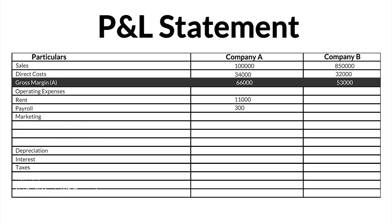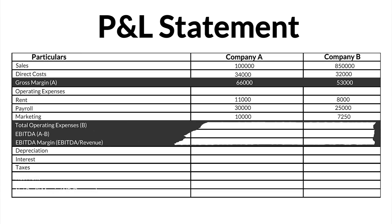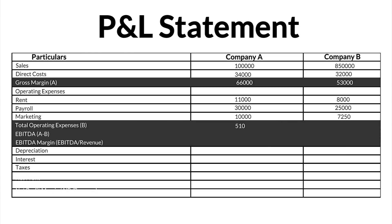To determine the profits earned by the company before depreciation, interest and taxes, we subtract the operating expenses. While the profits from company A might seemingly appear higher, on calculating the EBITDA margins, it becomes evident that the earnings capacity of both the companies stands at the same level.